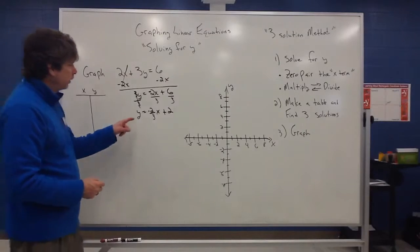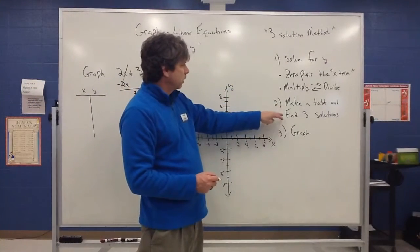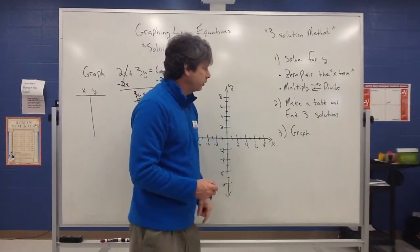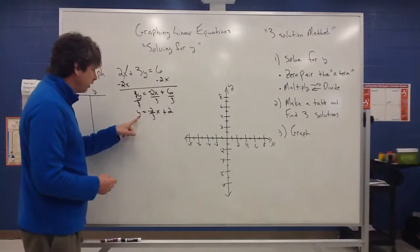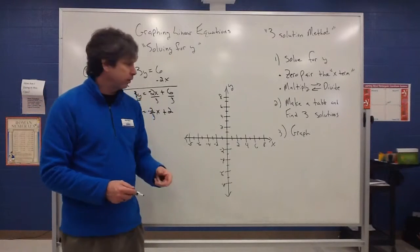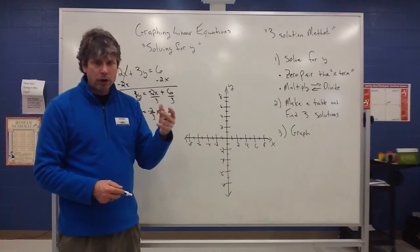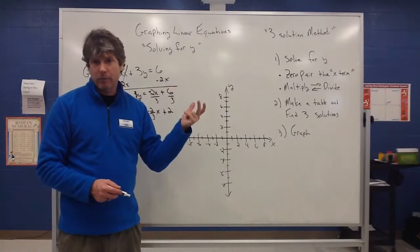So now what we're ready to do is we've solved for y. We now want to make a table and find three solutions. So when it's solved for y and finding three solutions, we always want to pick numbers that work well for us. Because we're going to try to graph these on a coordinate plane. And we are looking for whole number answers if possible.